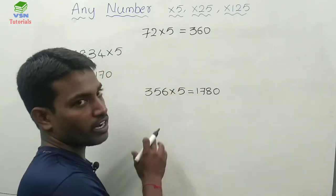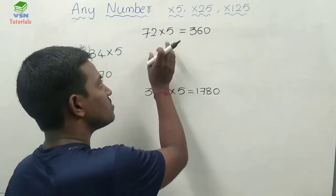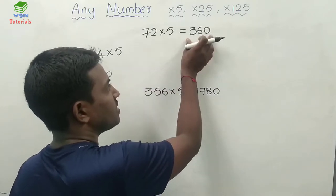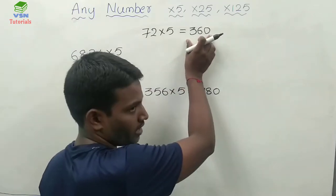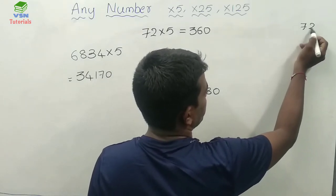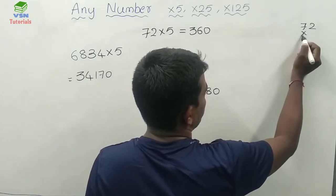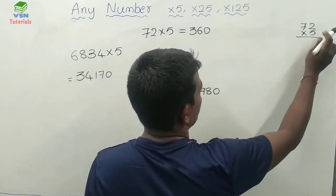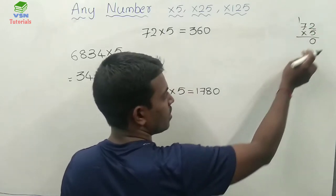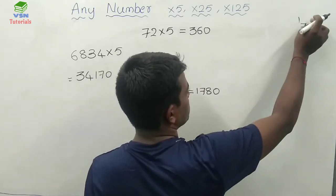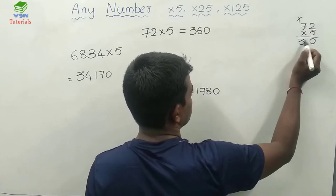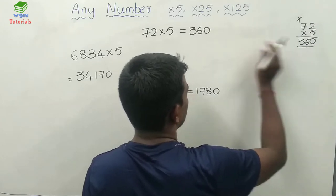Before getting into the trick, just confirm whether the answer is right or wrong by doing it in a conventional way. 72 times 5: 5 twos are 10, carry 1. 5 sevens are 35, 35 plus 1 is 36. Yes, the answer is correct.